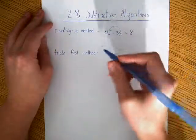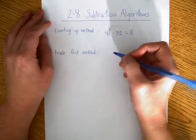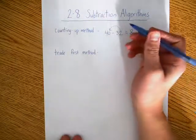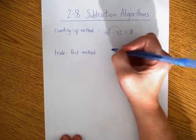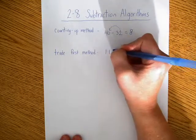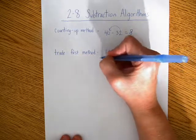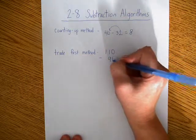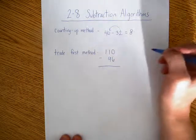The trade first method, let's say I want to do 110 minus 96. Let's say I want to do that one.